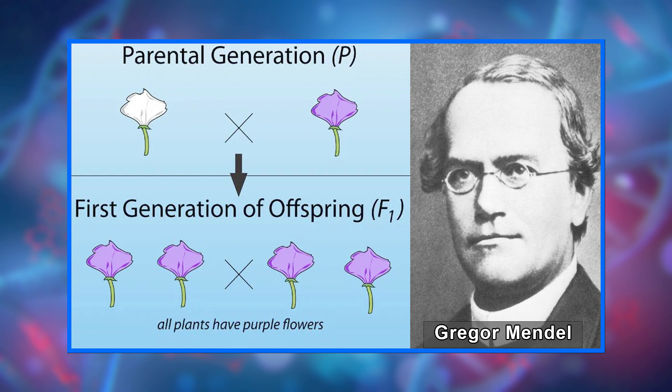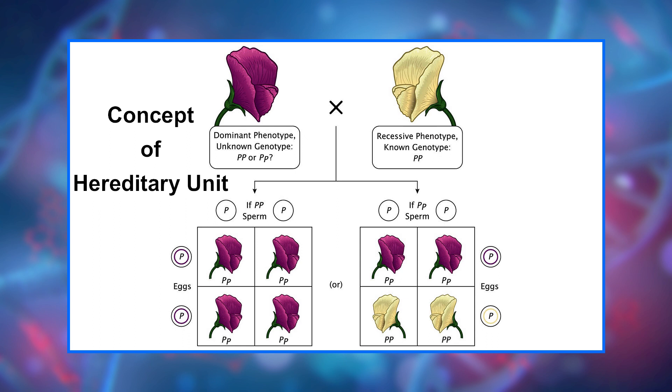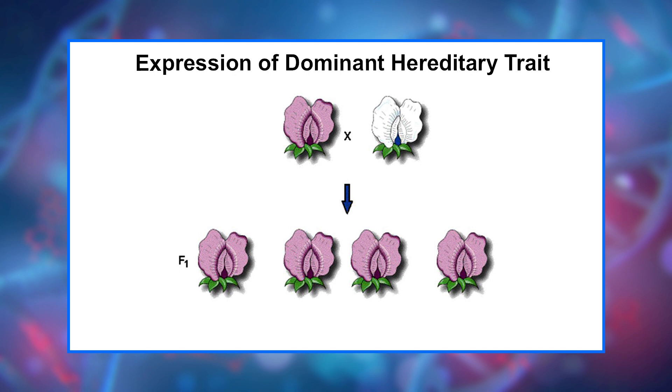Mendel's laws discovered that by crossing white flower with purple flower plants, the result was not a hybrid offspring. Rather than being a mix of the two, the offspring was purple-flowered. He then conceived the idea of heredity units, which he called factors — one recessive and the other dominant. Mendel said that factors, later called genes, normally occur in pairs in ordinary body cells, yet segregate during formation of sex cells. Each member of the pair becomes part of a separate sex cell. The dominant gene, such as the purple flower in Mendel's plants, will hide the recessive gene, the white flower. So purple is the dominant trait, while white is the recessive trait.